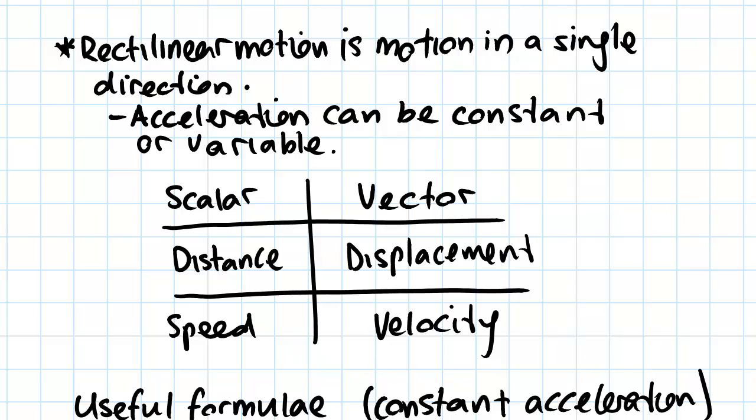Basically the differences between these are that displacement is the vector form of distance and velocity is the vector form of speed, meaning that displacement is dependent on the actual direction in which travel has been undergone.